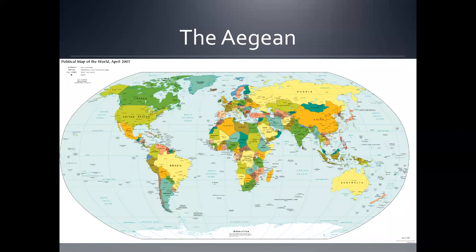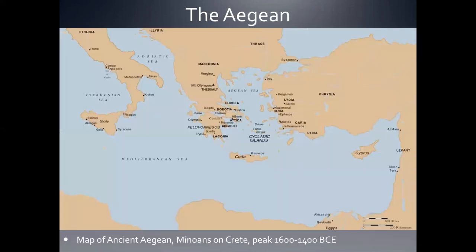We've gotten to the Aegean, and I always like to start with a map. You can see where the Aegean is located — we're basically talking about the sea between modern-day Turkey and Greece, and the land area as well. In this class, we're calling 'the Aegean' the times before the ancient Greeks, so we don't quite have a Greek language at this time, but later on we'll be talking about the exact same land areas as the ancient Greeks.